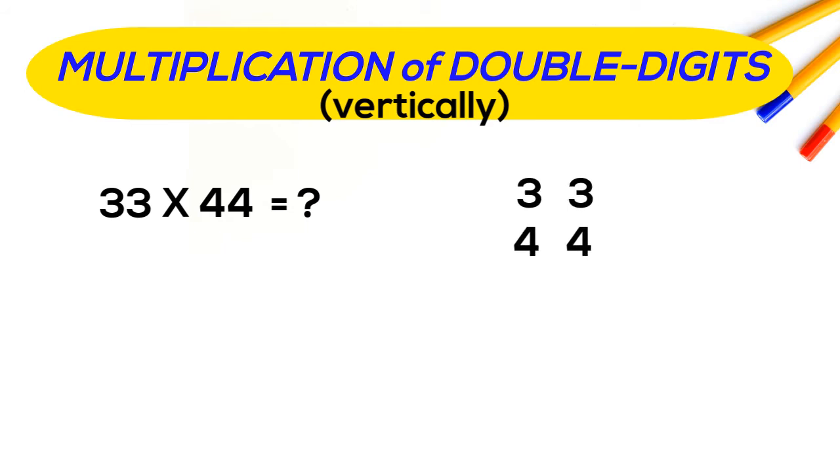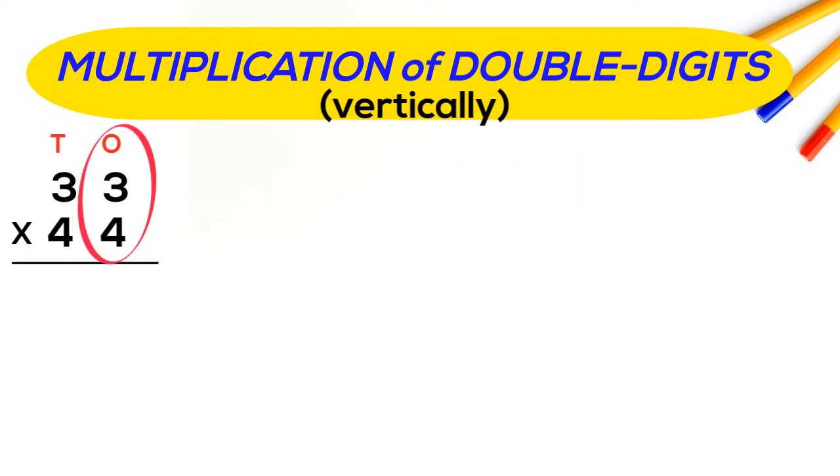Write 33 into 44 vertically and write the place values of it. Now we will make three columns: first to multiply the numbers of one place and then numbers of 10 place, then in the middle of the numbers in crisscross math.